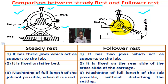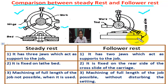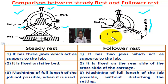This is the follower rest. It is also made of cast iron. It is used for supporting long slender workpieces against cutting tool force. The design permits it to be clamped to the cross slide of the carriage, enabling it to travel along with the cutting tool. It has two adjustable jaws to support the workpiece.